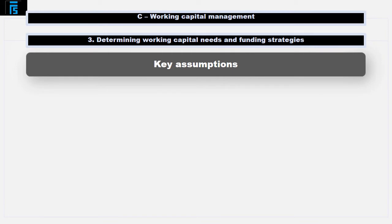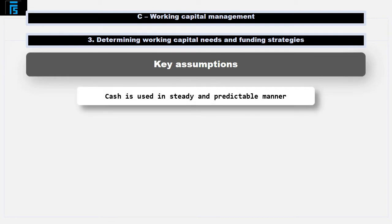This model, like the economic order quantity, relies on a number of assumptions. The first is that cash is used in a steady and predictable manner. However, businesses are rarely steady and predictable, and this makes the result of the Baumol model unreliable in less than certain circumstances.